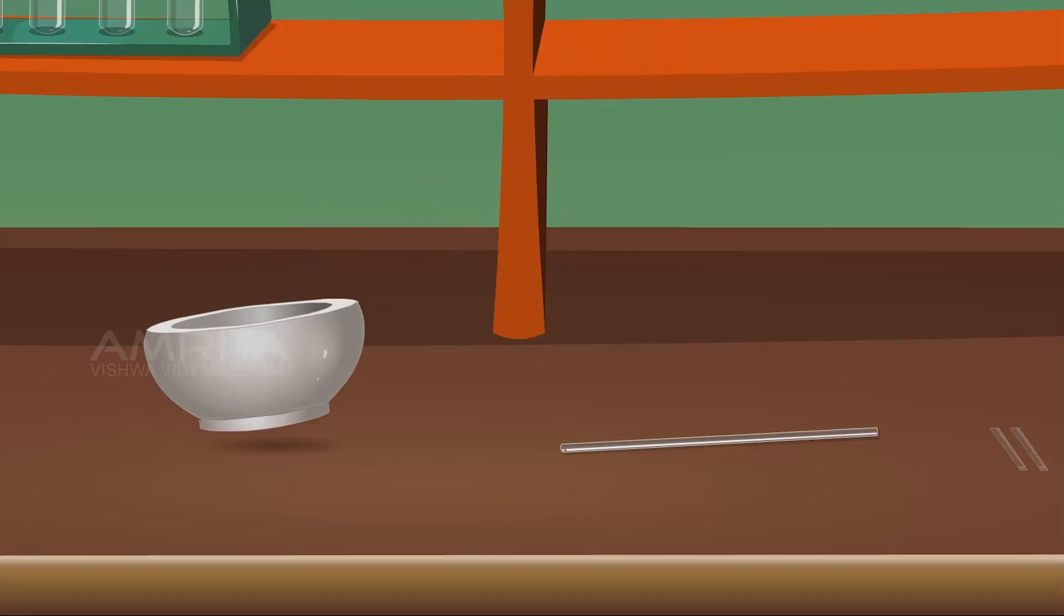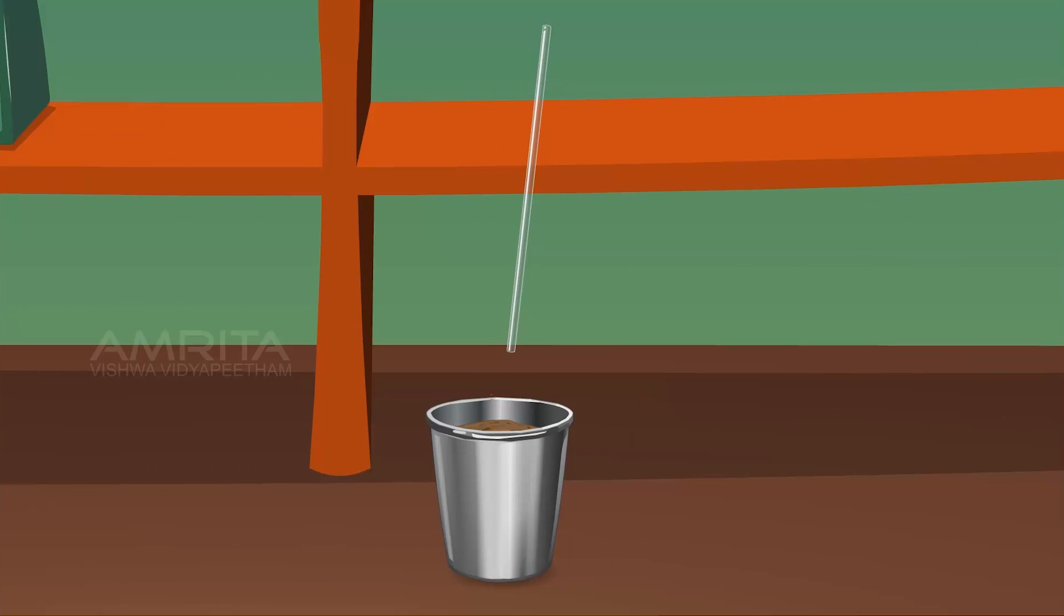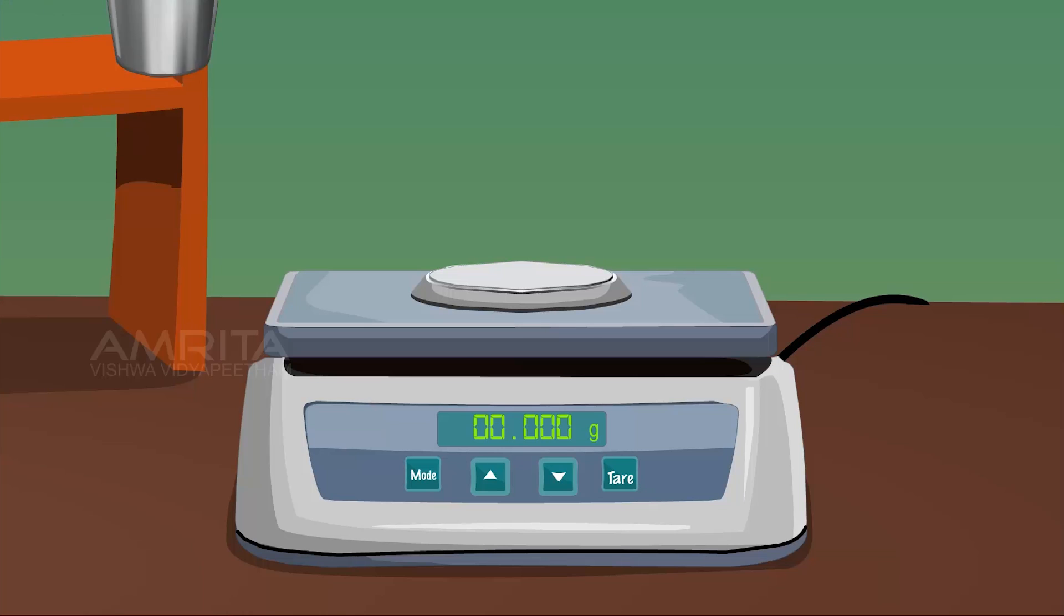Take a glass rod and tap the box gently several times so that soil is compactly filled and forms a uniform layer at the top. Weigh the tin box along with soil sample and note its weight.